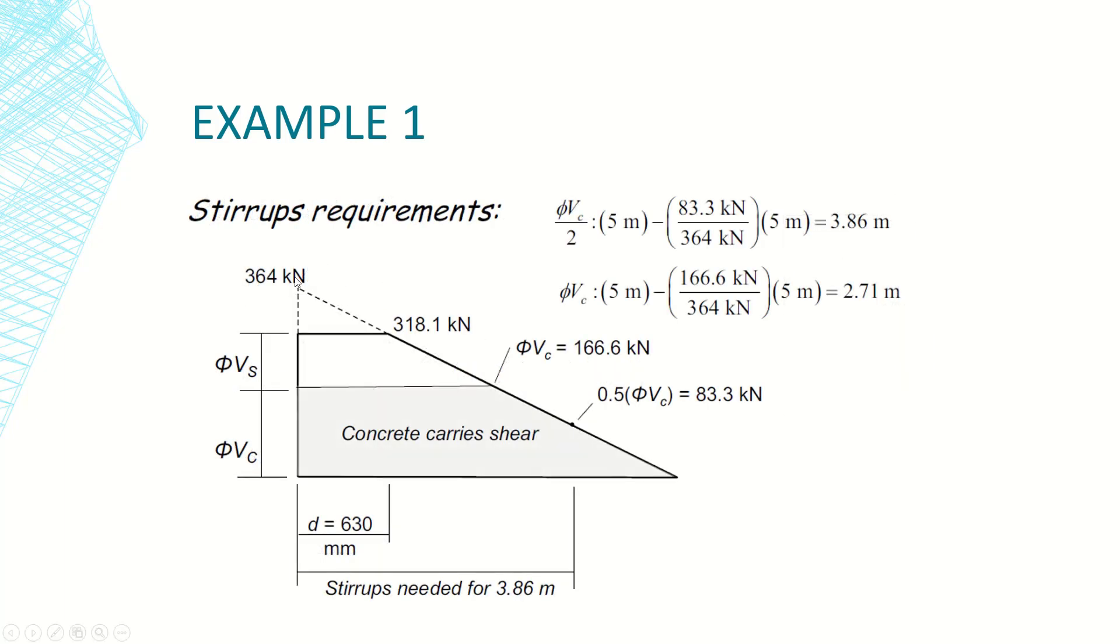Now as for stirrup requirements, we determine the position of the previously mentioned two points. This is the span of the beam, this is the position of the cantilever side and this is the free side. This is the shear force diagram. Here we have the distance d, so starting from distance d we have 318.1 which is the maximum value to be designed for.